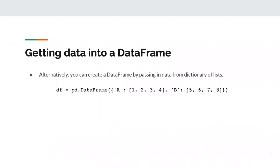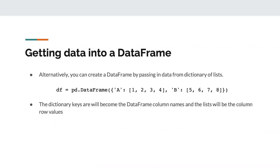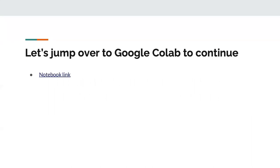Another way to get things into a DataFrame is by passing in a dictionary, where the keys become the column names and the values — which are lists — become the column row values. This is helpful if you want to create data yourself. Before jumping into Google Colab, I'll pause and ask if there are any questions.